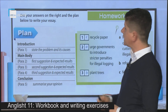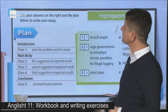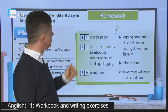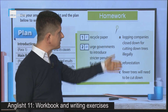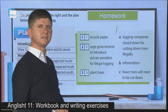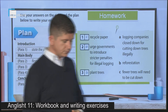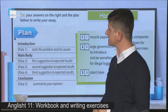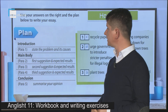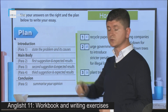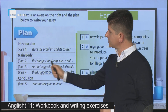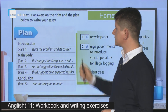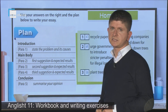Next exercise — as a homework, use your answers on the right and the plan below to write your essay. You might use these ideas, these solutions and these expected results to write an essay providing solutions to the problem. Remember to follow the plan by writing a five-paragraph essay: in the first paragraph you are going to state the topic and its causes; in the second, third and fourth paragraphs you are going to write three suggestions and three results; while in the last paragraph you are going to summarize your opinion.